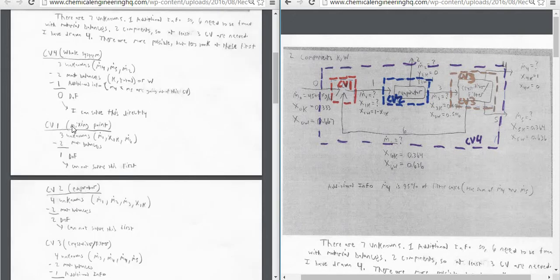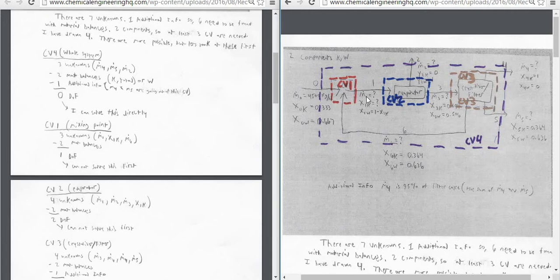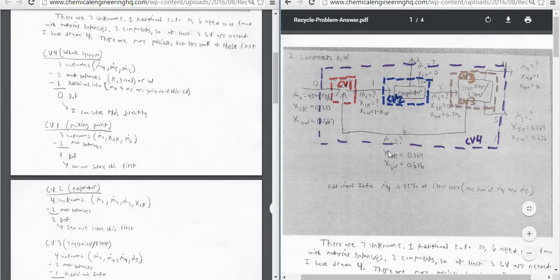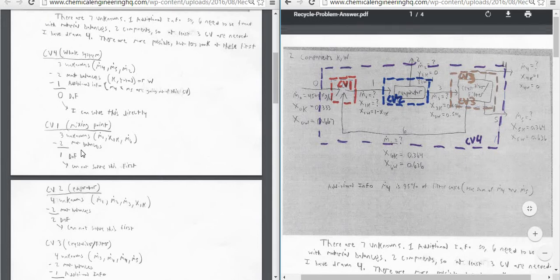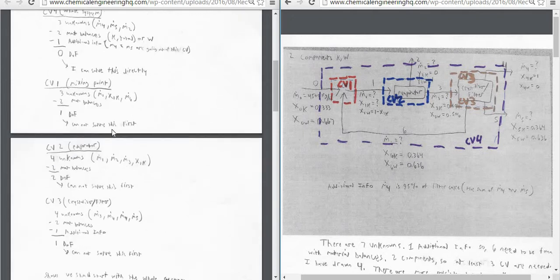If we look at control volume one, which is the mixing point, CV1, the red one here, we have three unknowns, which would be M1 and X1K. And then we also have M6, which is unknown. And we only have two material balances, so we have one degree of freedom, which means we can't solve it.